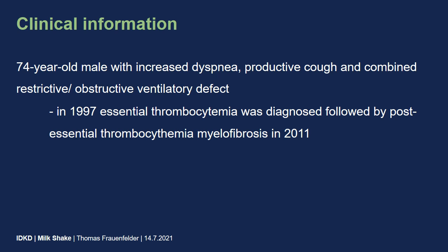Here is the clinical information on my case. I will present a 74-year-old male with increased dyspnea, productive cough, and combined restrictive as well as obstructive ventilation defect. In 1997, an essential thrombocytopenia was diagnosed, and in 2011 a post-essential thrombocytopenia myelofibrosis was added.